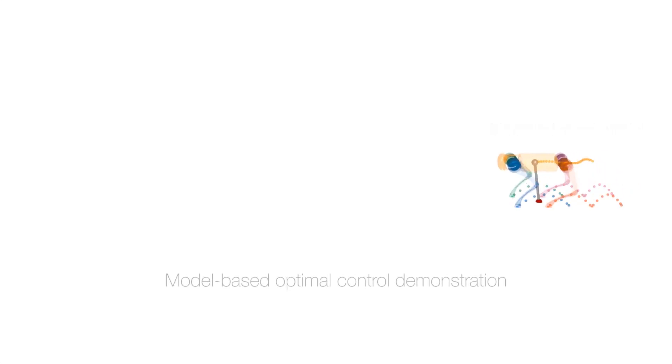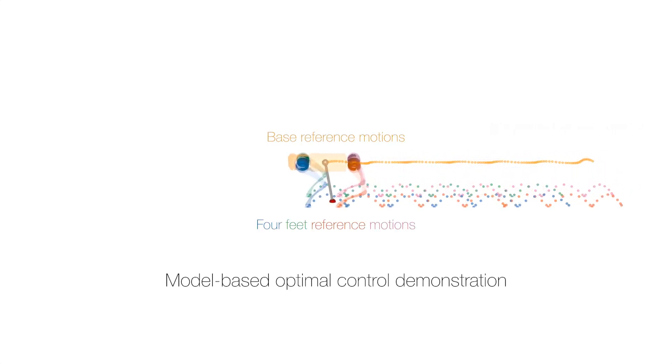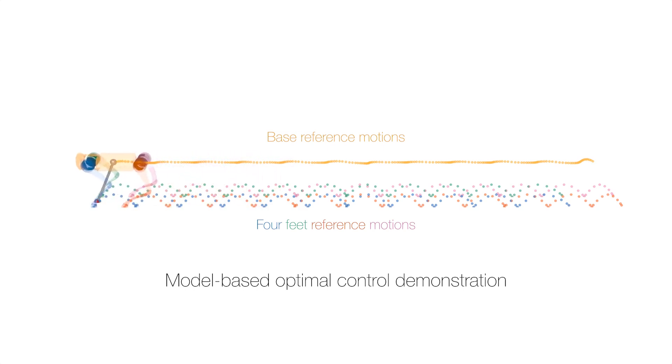We designed an RL task to replicate motions from solving a finite horizon control problem with a simplified robot model. The base and feet motions from model-based control demonstrations help to maintain distinct gait styles and easily integrate user-defined motion parameters.